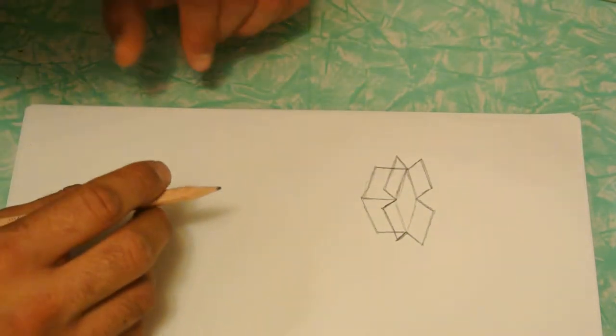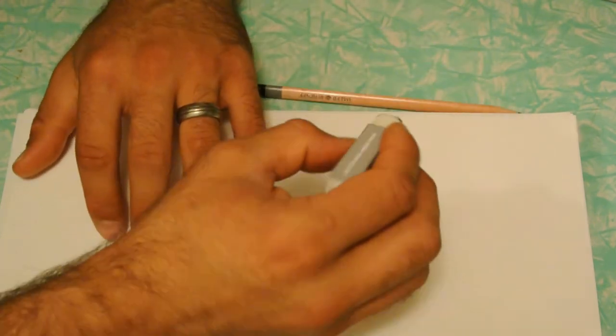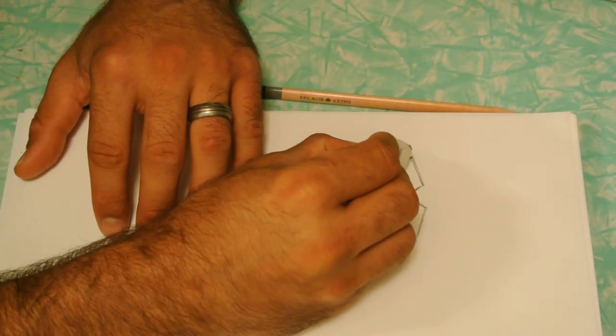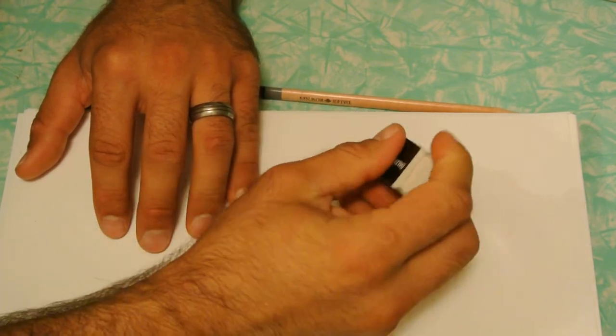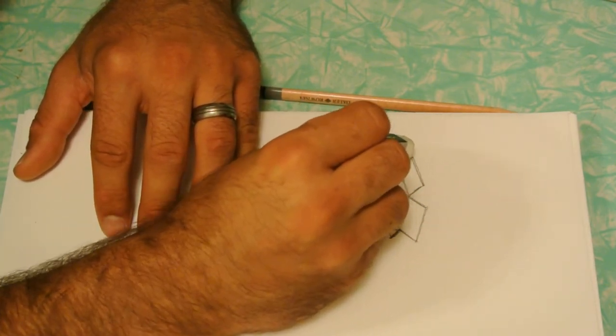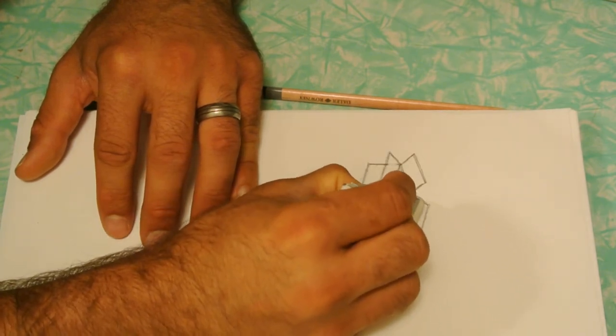There's your box. Now we're going to really make it come out. You're going to erase the lines in there that you shouldn't be able to see on the back side of the flap.